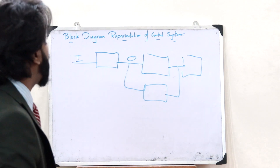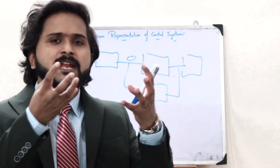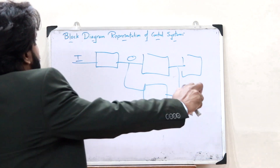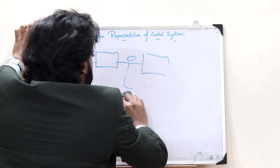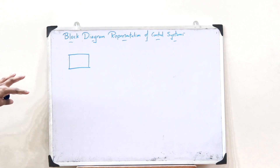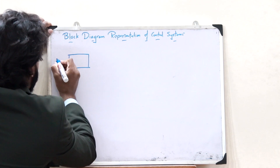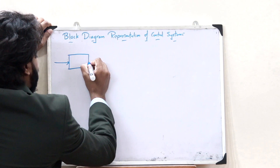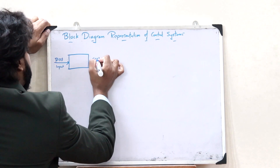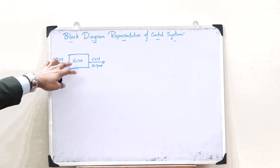In the case of a block diagram representation, there are a few elemental components used for obtaining the block diagram. The first such elemental component is simply a block. This block has a particular input and a particular output. If the input is R(S), then the output may be C(S), and this block represents the transfer function G(S).